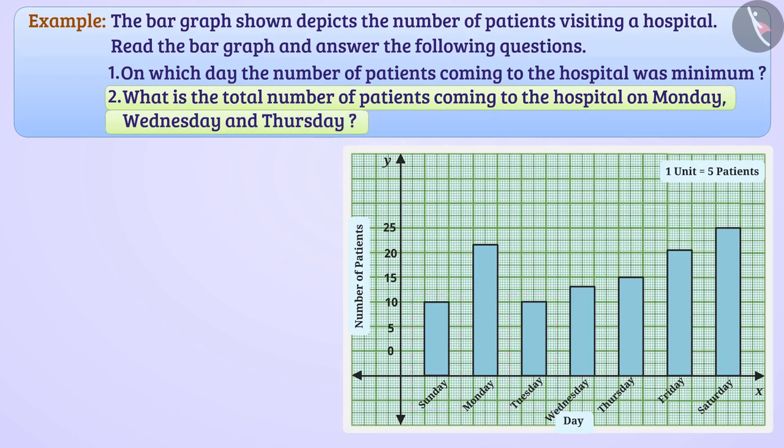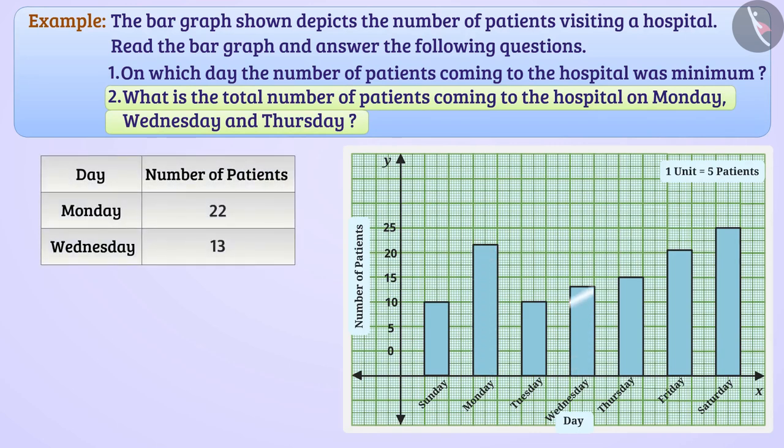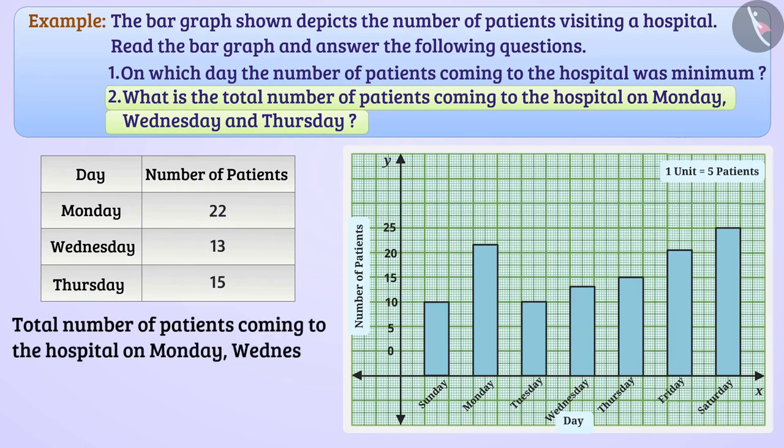Based on the length of the bars, we can say that in the hospital, 22 patients visited on Monday, 13 patients on Wednesday and 15 patients on Thursday. In this way, the total number of patients coming to the hospital on Monday, Wednesday and Thursday is 22 plus 13 plus 15 is equal to 50.